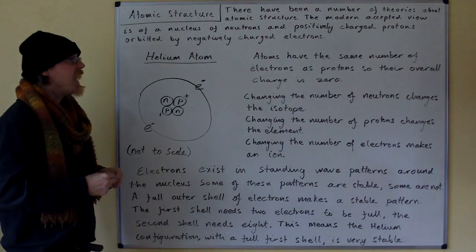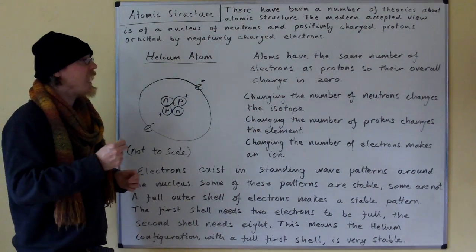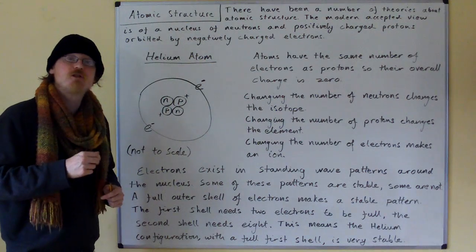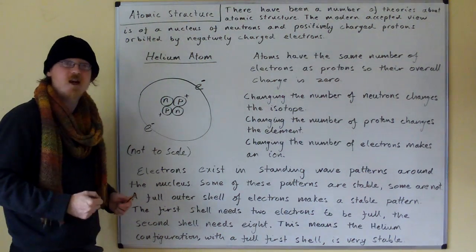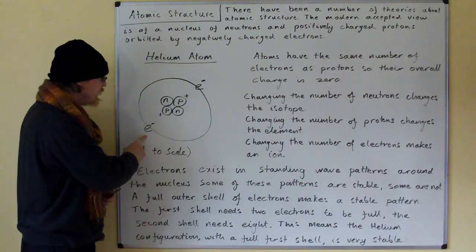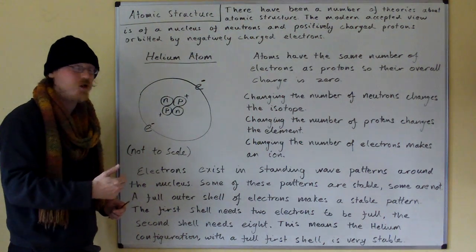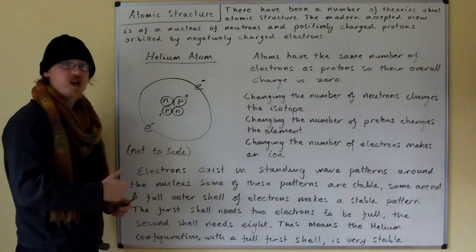Atoms have the same number of electrons as protons, so their overall charge is zero. We've got two positively charged protons in our nucleus and two negatively charged electrons orbiting our nucleus, so overall the charge is zero.